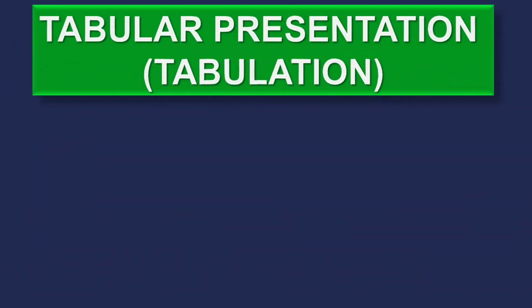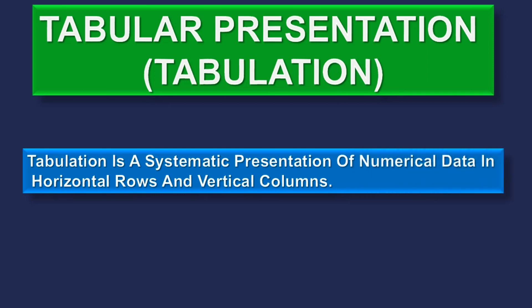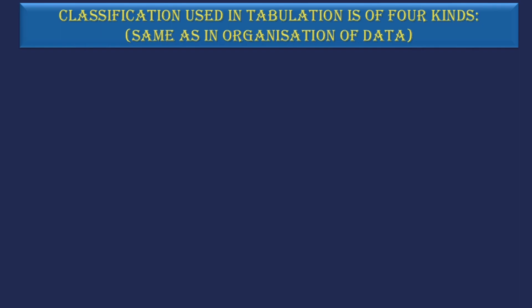Tabular presentation or tabulation is a systematic presentation of numerical data in horizontal rows and vertical columns. Classification used in tabulation is of four kinds.